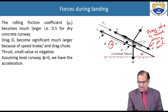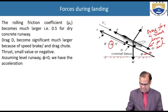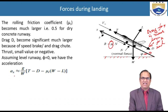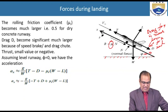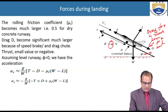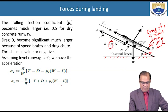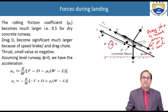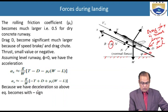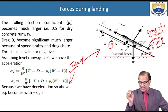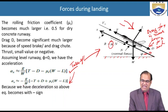Assuming a level runway where phi equals zero, the acceleration ax equals g/W multiplied by the quantity: T minus D minus mu_r times (W minus L). For landing this becomes negative — ax equals minus g/W times (minus T plus D plus mu_r times (W minus L)) — since the aircraft is decelerating. By changing the sign from the takeoff equation, we get the landing deceleration.